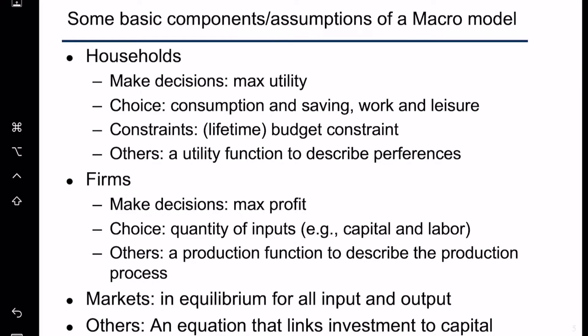Another component of a macro model is the market. Because we have households and firms, we have suppliers and demanders for capital and labor. Supply and demand meet in the market, and we assume that quantity supplied equals quantity demanded at equilibrium. This equilibrium applies to all inputs — capital and labor — as well as to output, because whatever amount of goods is produced must eventually be consumed by households, otherwise it would effectively be wasted.